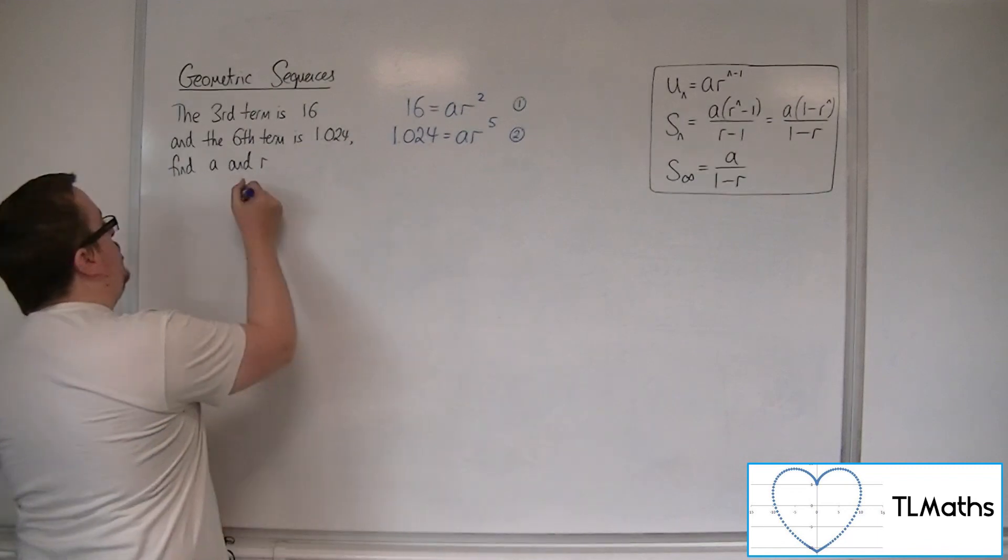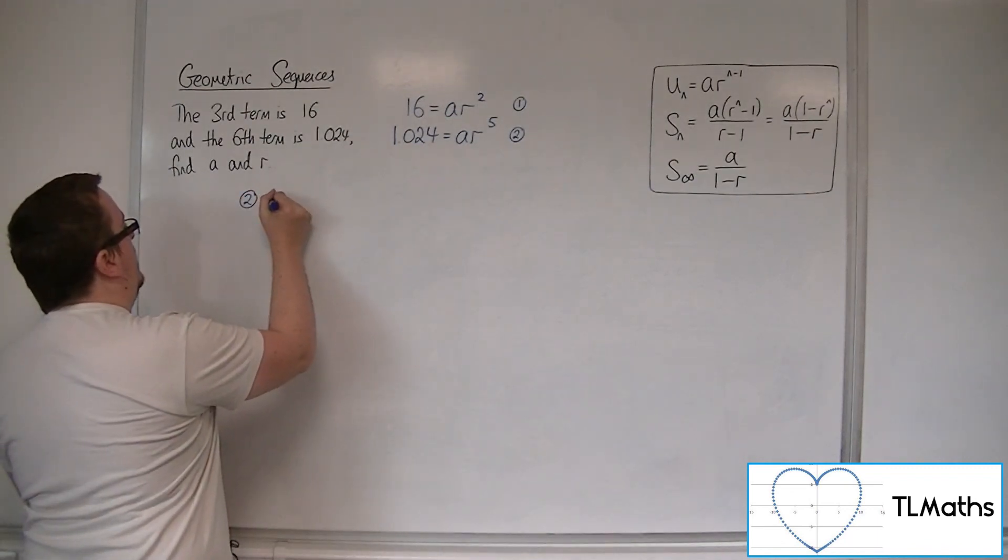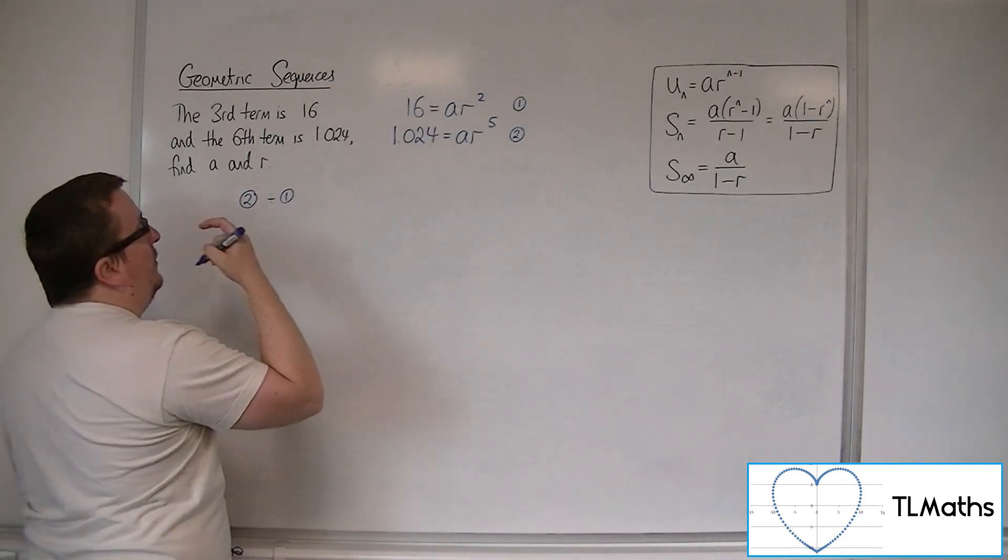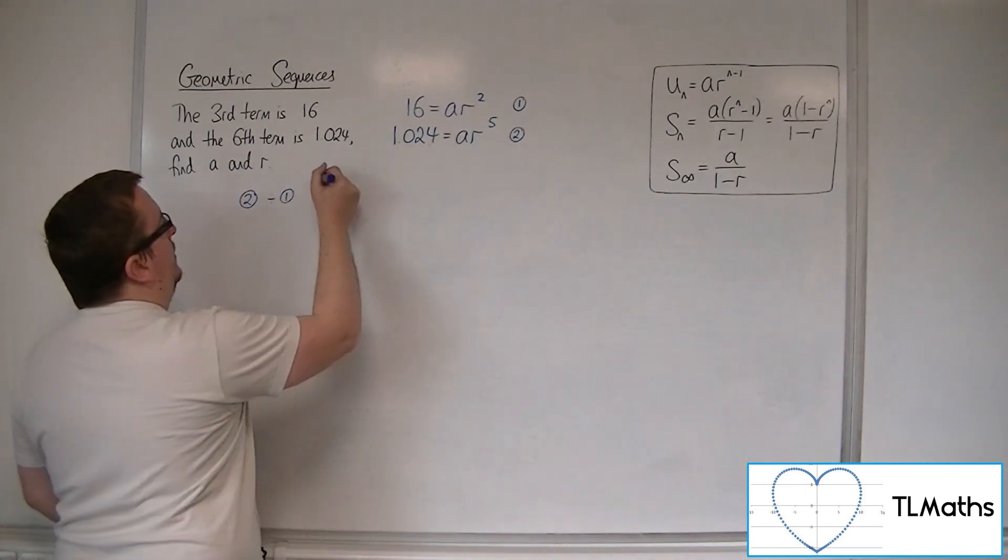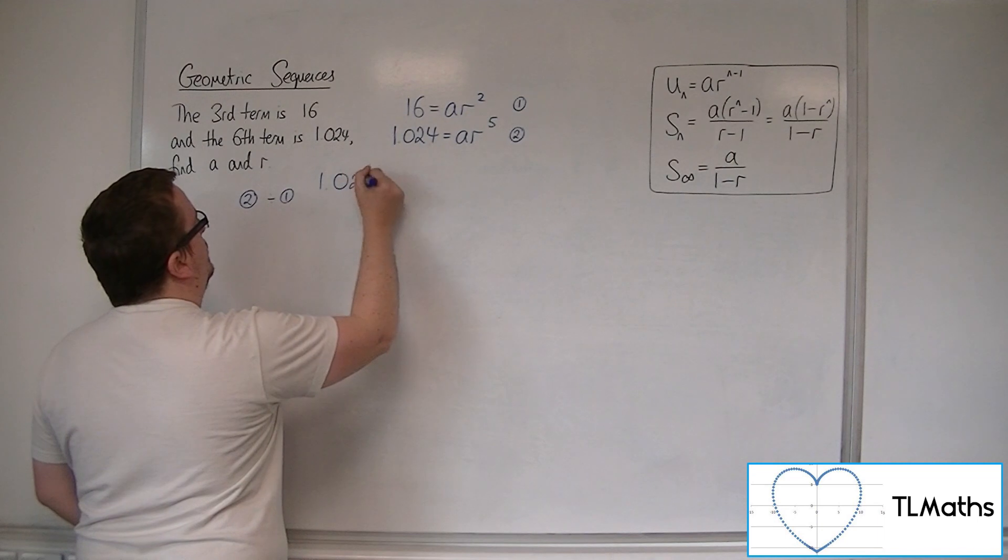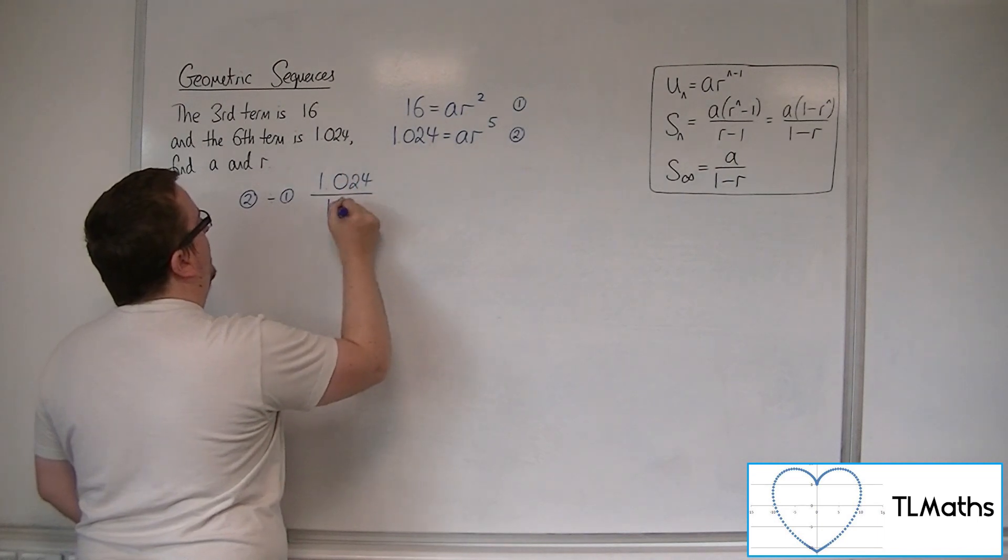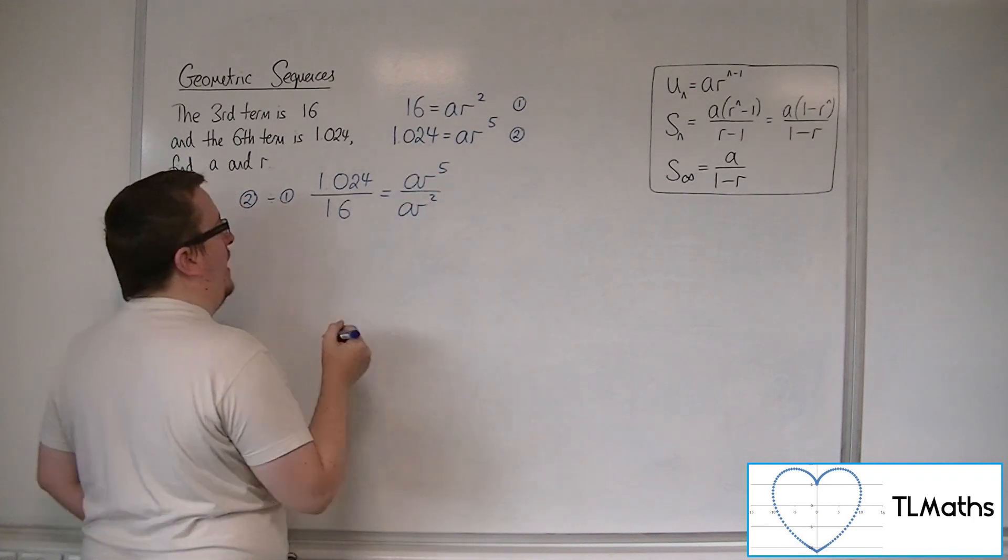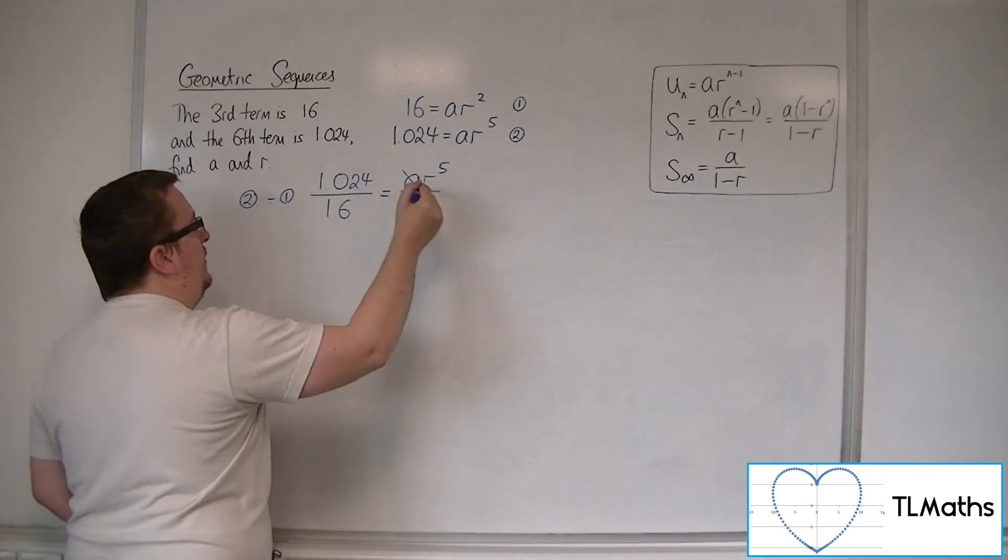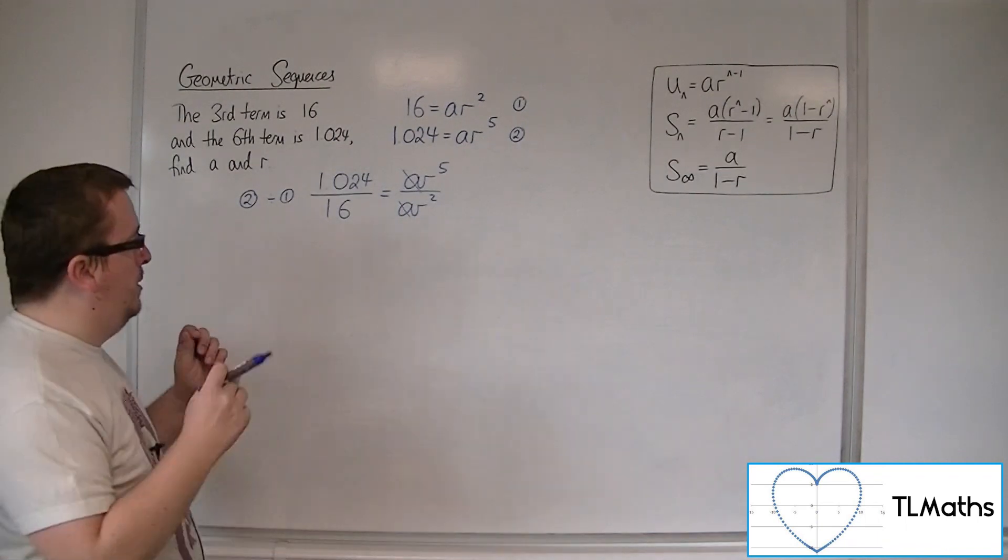It makes sense to do equation 2 divided by equation 1, because then I'm going to have an r to the 5 divided by r squared. So let's see what happens. We've got 1.024 over 16 is equal to ar to the 5 over ar squared. Now the a's, in this case, can cancel. Perfect.